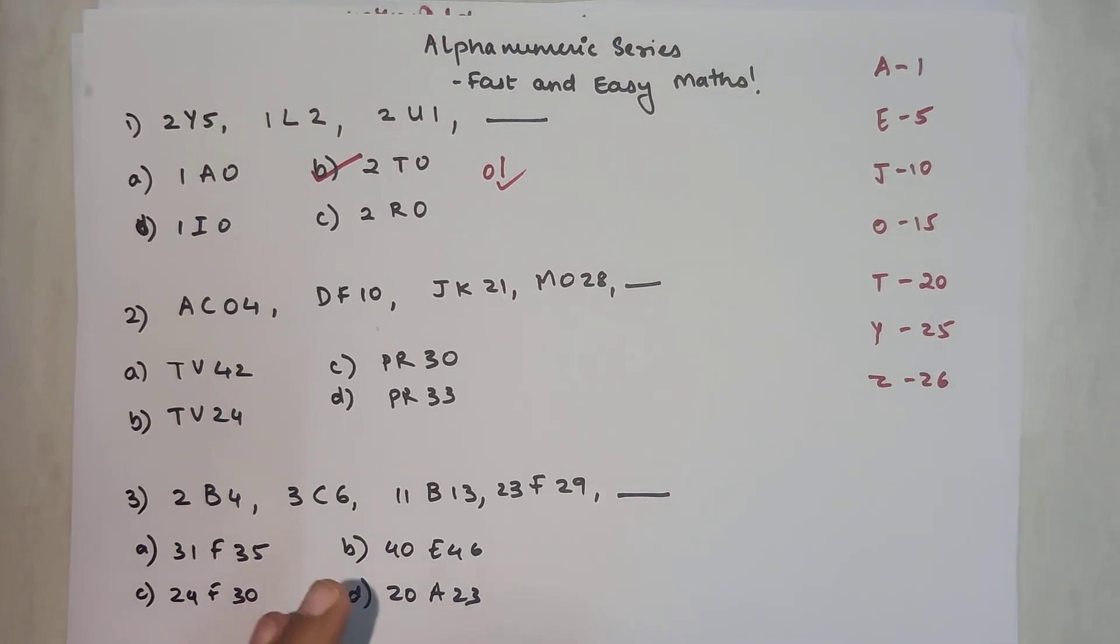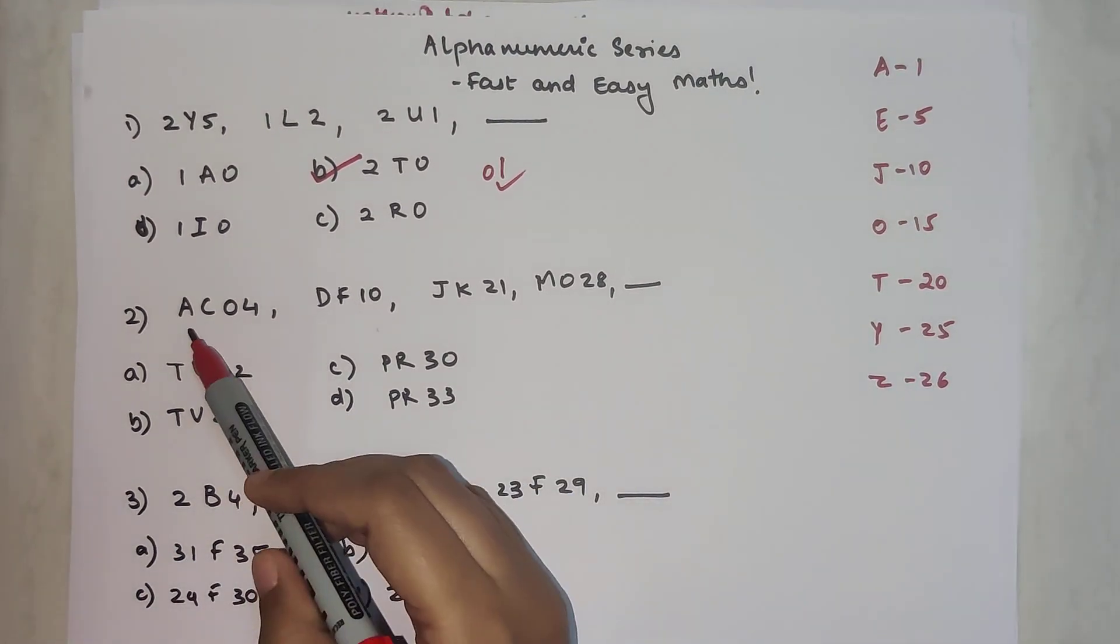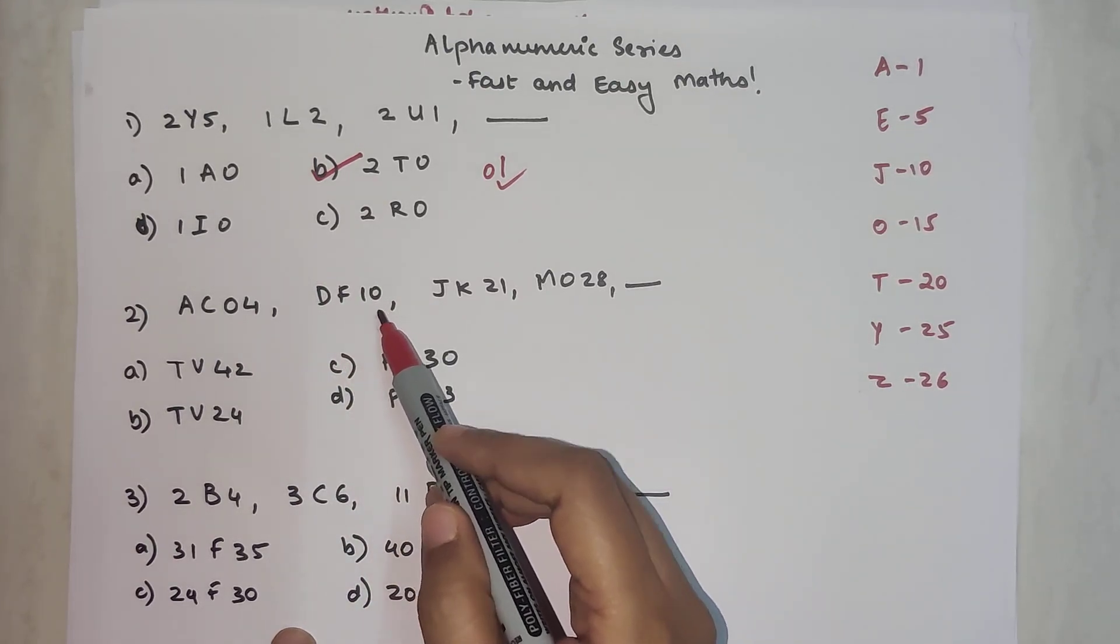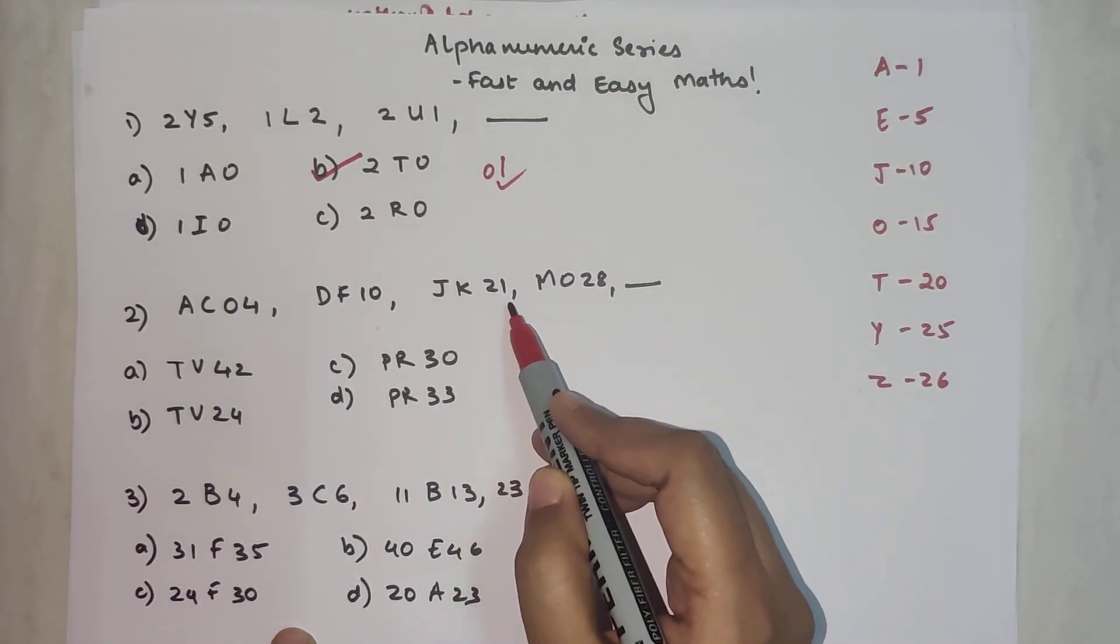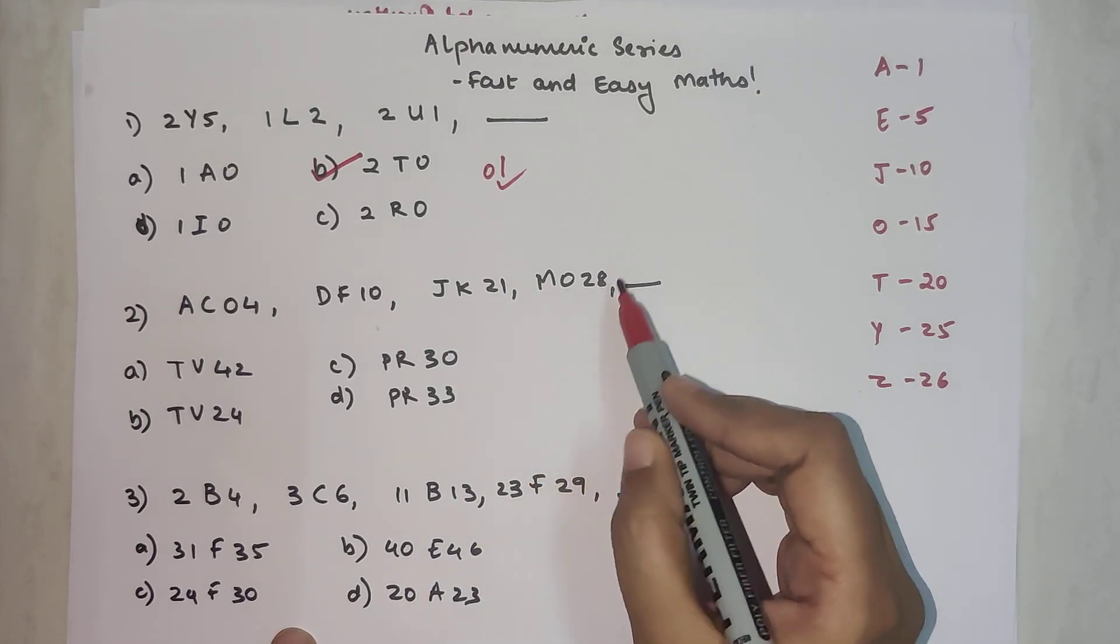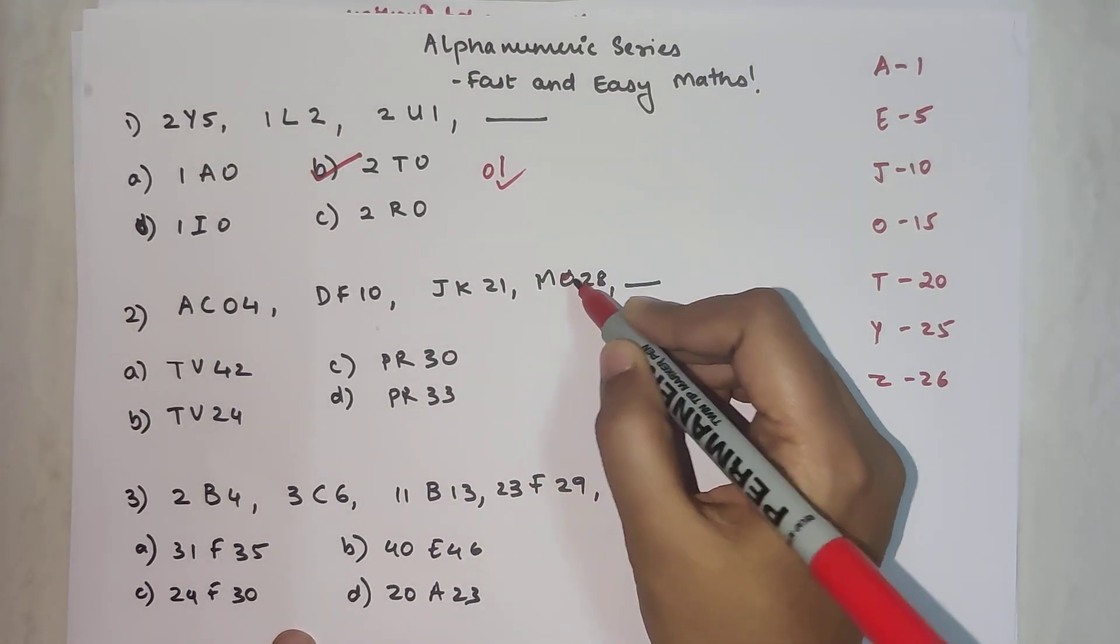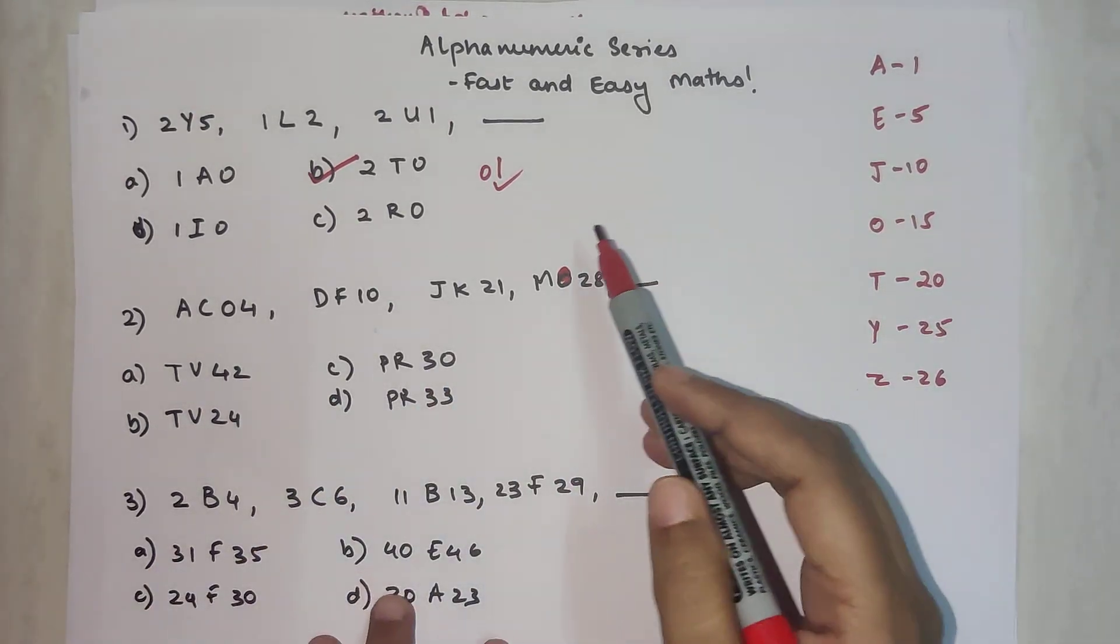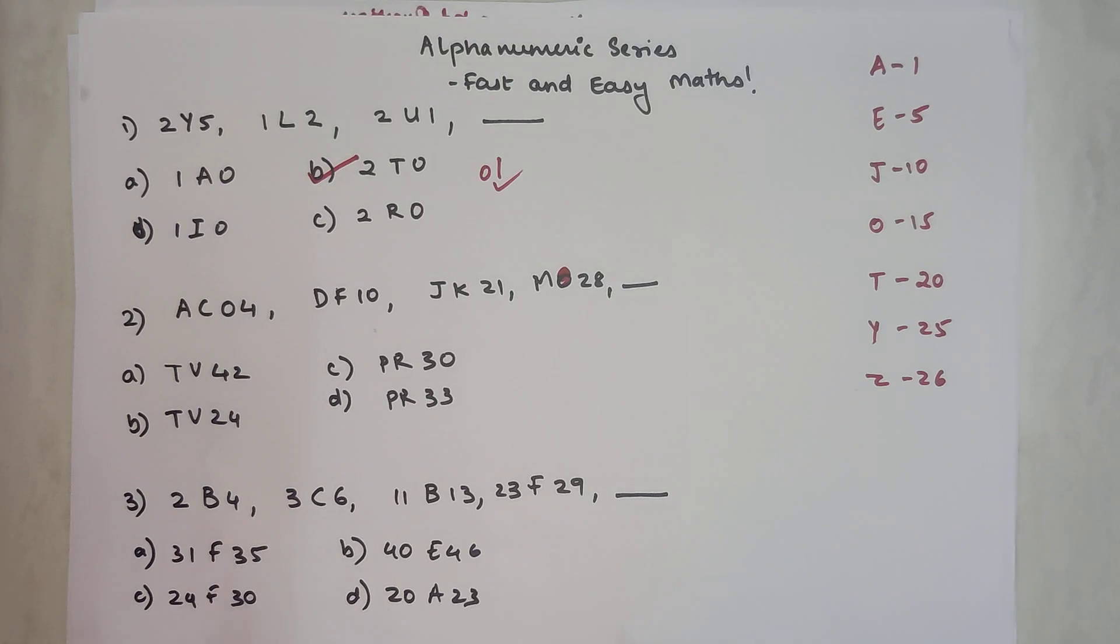Now the next question. We have AC followed by 04, then DF which is followed by 10, then JK followed by 21, then MO followed by 28.